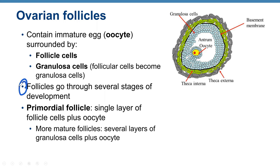Follicles go through several stages of development. Females are born with primordial follicles, which consist of a single layer of follicle cells plus an oocyte. More mature follicles have several layers of granulosa cells plus an oocyte. The primordial follicle has a single layer; when multiple layers are present, those cells are called granulosa cells.